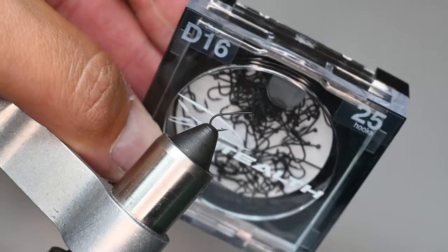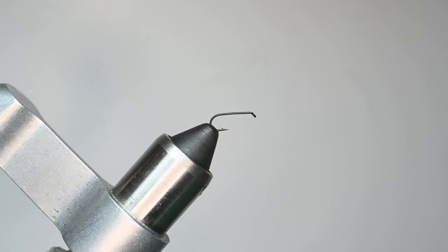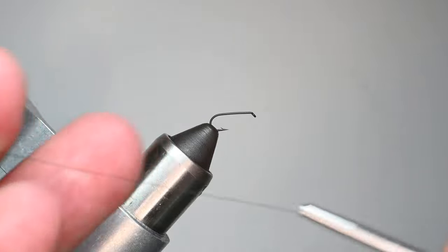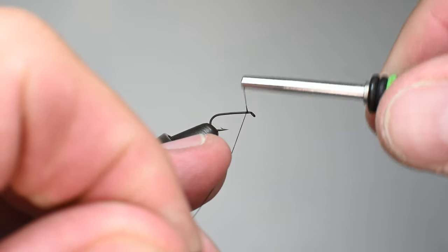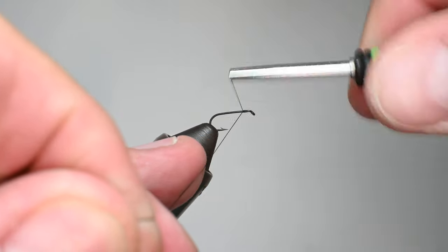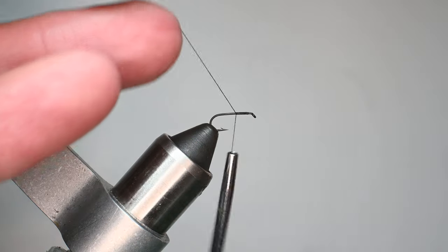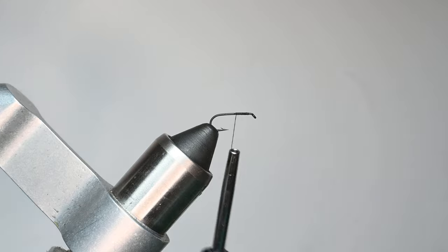This is a size 16 hook by Stealth Hooks. The D stands for dry series, and this is the Semperfly in an ADOT wax thread. I'm going to start this right behind the eye with a little bit of spacing between the eye and where I started my thread. That way later we'll have a little bit of room to close this fly off.